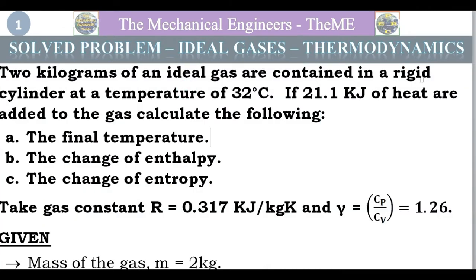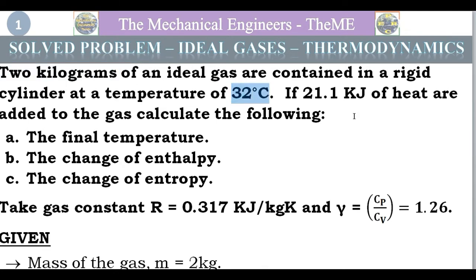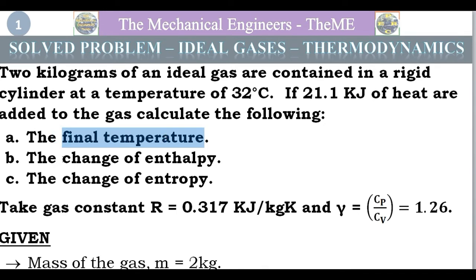Now I will analyze the question. There is a rigid cylinder completely filled with gas. The mass of gas inside the cylinder is 2 kg and the temperature of the gas is 32 degrees Celsius. The rigid cylinder is being heated, so 21.1 kilojoules of heat is being added to the gas. We have to find the values of the final temperature, the change of enthalpy, and the change of entropy.